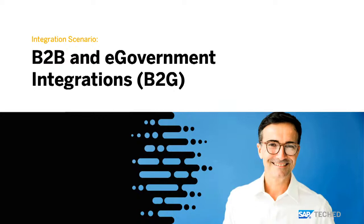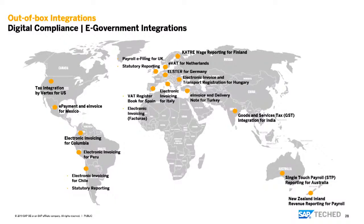The second scenario is B2B and B2G. In B2B we support traditional EDI as well as new-age B2B with APIs. For e-government, we provide out-of-the-box integrations: EVAD integration if you're in Spain, ELSTER integration in Germany, single-touch payroll in Australia, payroll e-filing for the UK, GST if you're in India, electronic invoicing in Latin America, and tax integration via partner Vertex in the US. All of this comes free with integration suite. We added South Korea and keep adding countries as new regulations come in.